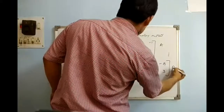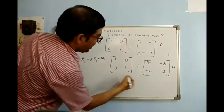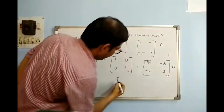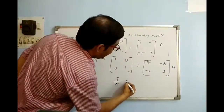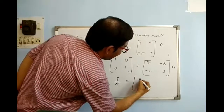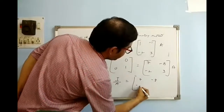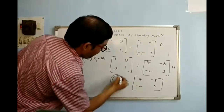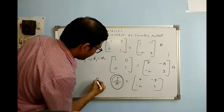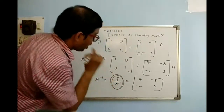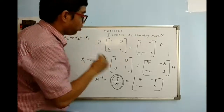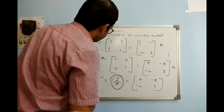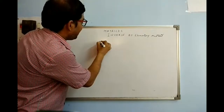Now we see this is I. If I write this as I and bring the A here, I am left with [7, −3; −2, 1]. By basic definition this is A inverse. So automatically we got A inverse. This is the way we find A inverse. One more example I am taking.